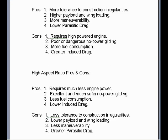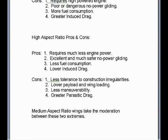Moving on to the high aspect ratio wing — pros and cons. The pros are requires much less power, excellent and much safer no-power gliding, less fuel consumption, and lower induced drag. Of course, you have a longer projection of the wing, so parasitic drag is going to be a little bit more of an issue inherently on the surface for exposed rivets and so on. The cons are less tolerance to construction irregularities, lower payload and wing loading, less maneuverability, and greater parasitic drag.